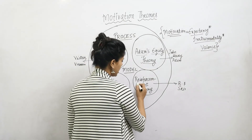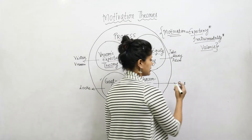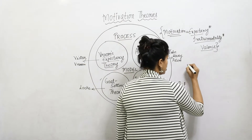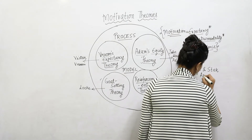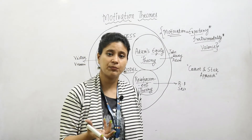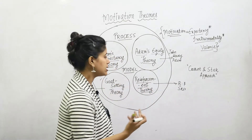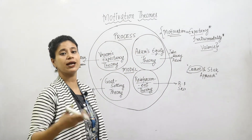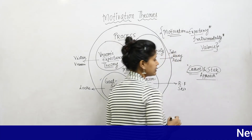Now comes our fourth theory under the process model: the Reinforcement Theory, given by B.F. Skinner. Reinforcement theory involves the carrot and stick approach. Whether to increase a behavior or decrease a particular behavior, we either reward employees or use the threat of consequences. Giving a reward to enhance behavior is the carrot, and using consequences to get things done is the stick. This approach is called the carrot and stick approach.